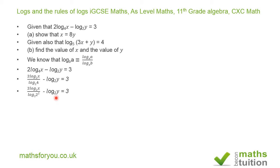Furthermore, according to one of the rules of logs, we can express the denominator as 2 log 2 to base 2. The 2's cancel out. Furthermore, log 2 to base 2 is 1. So we now have log x to base 2 minus log y to base 2 equals 3.